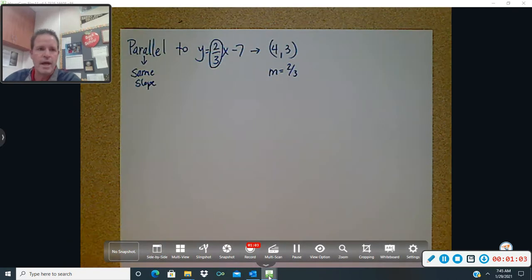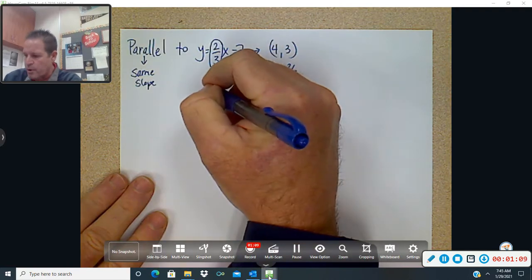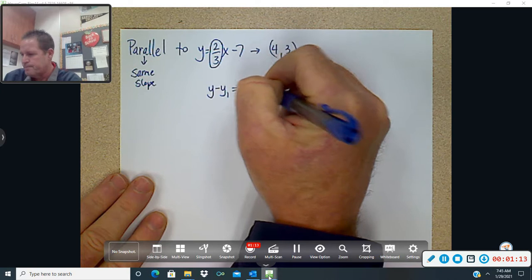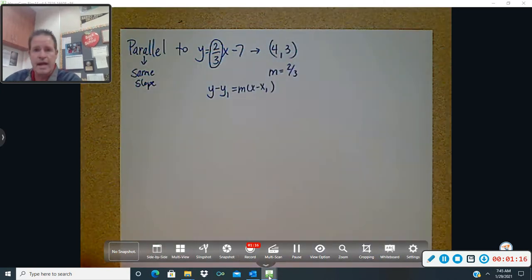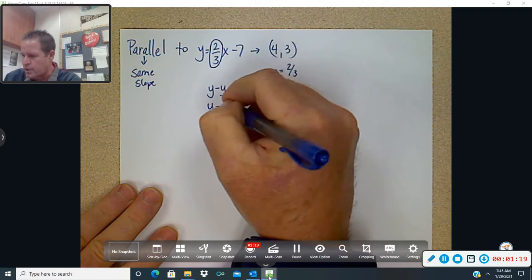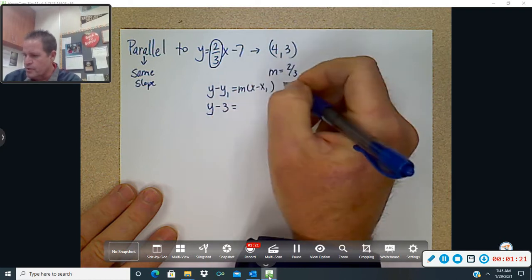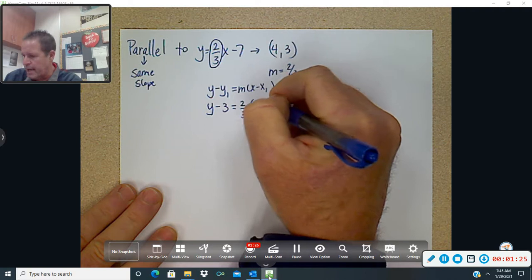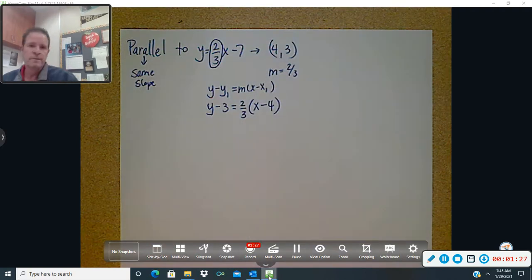All right, so let's go ahead and work through all three forms just like we were doing in class. Now, regardless of what form you are putting it in, you always want to start with point slope form. All right, so you're going to have y minus y1, which is 3, equals the slope. The slope is 2 thirds times x minus 4.